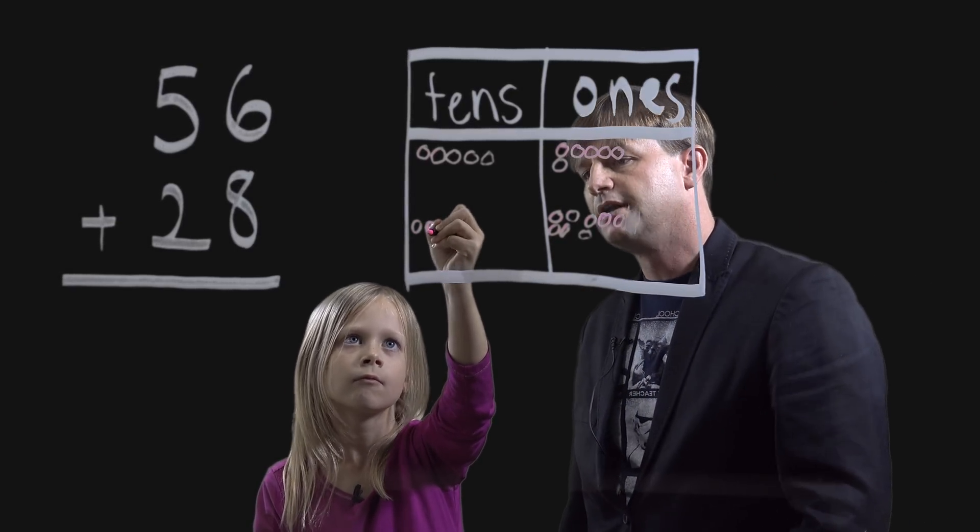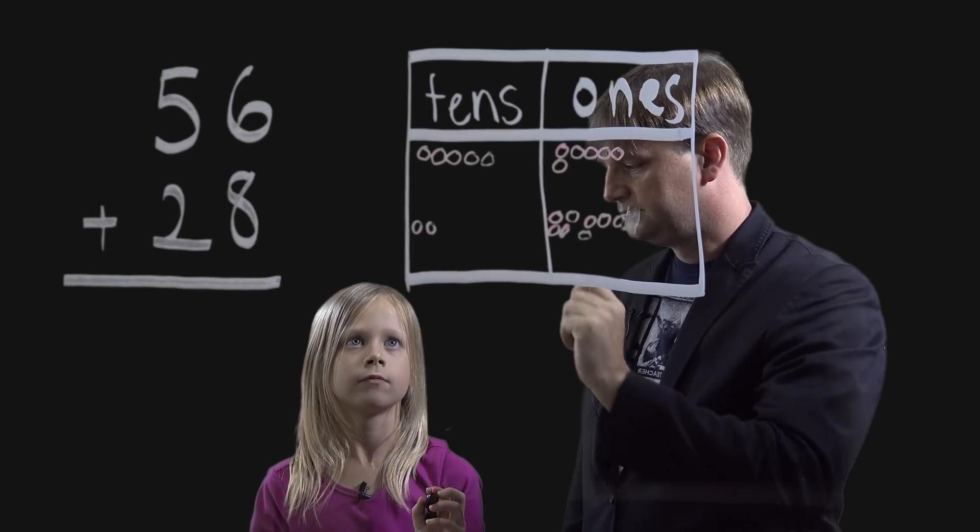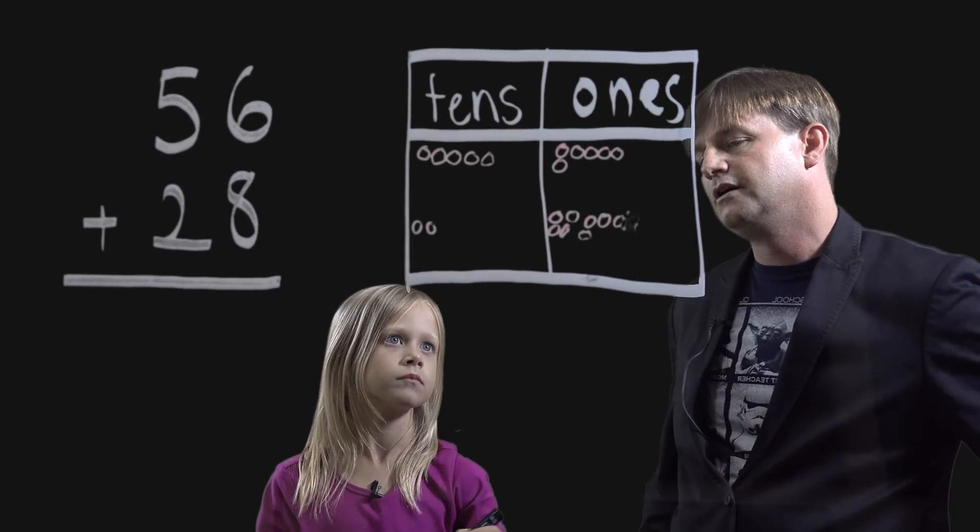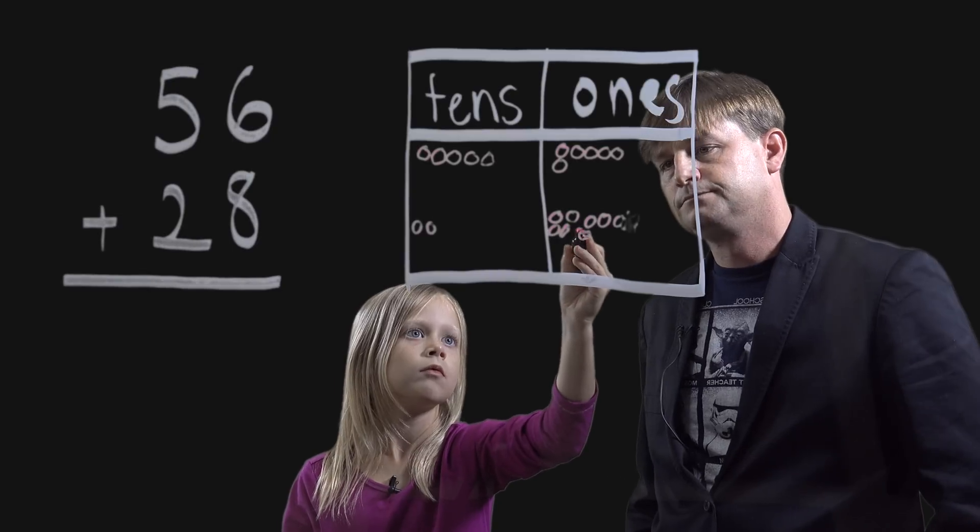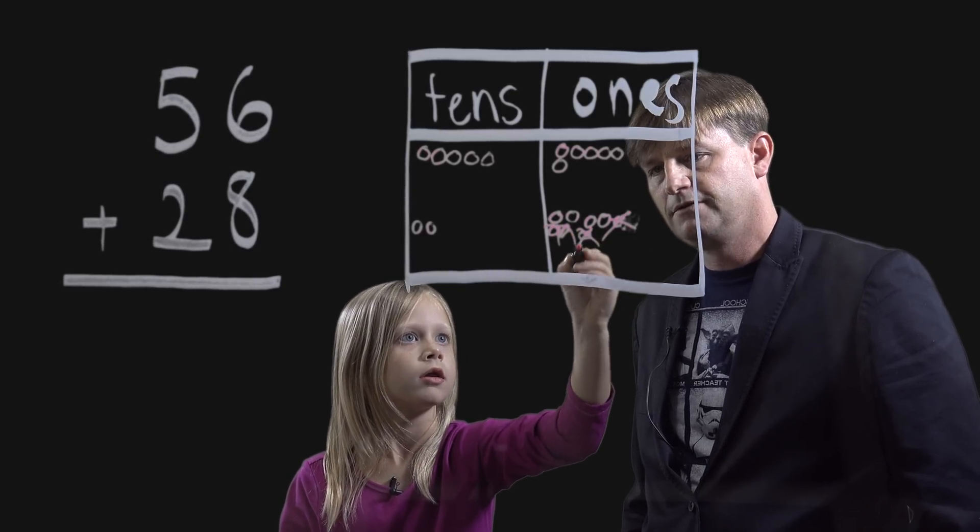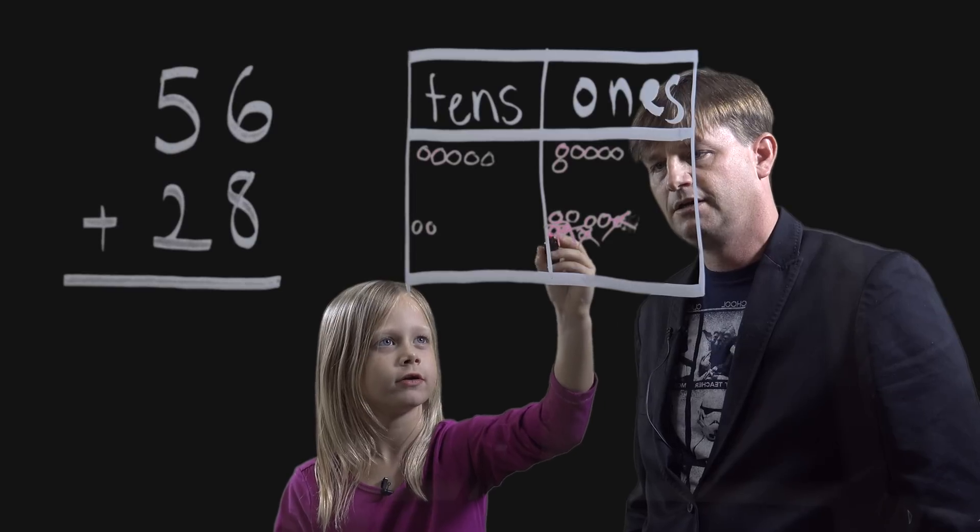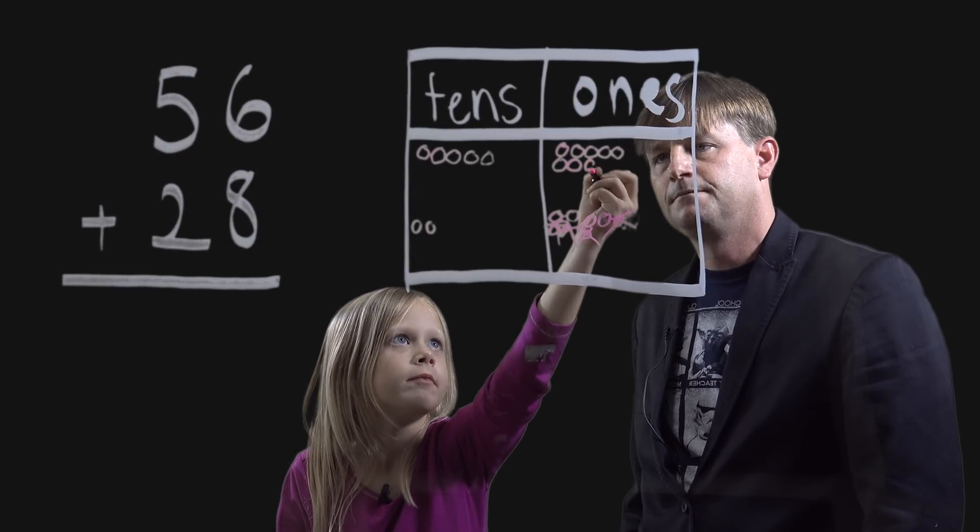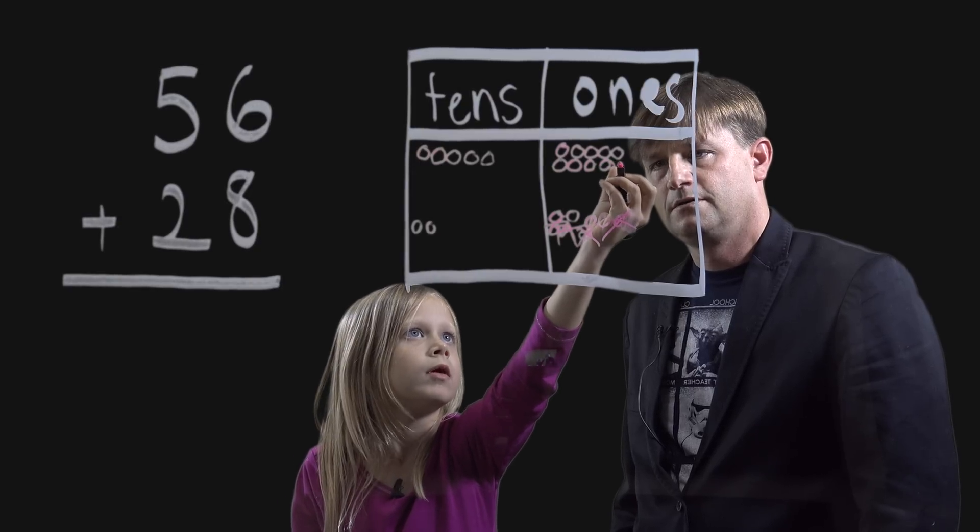And 2, how many is this? 2 tens. Show us what you're going to do with the ones. 1, 2, 3, 4. Explain what you're doing. I'm crossing out 4, I'm putting them up there.